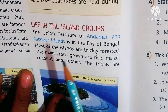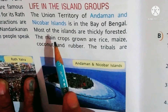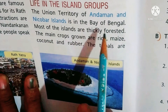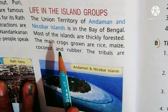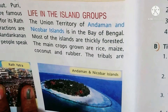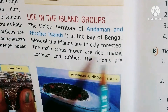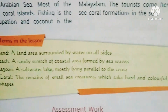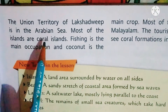Life in the island groups: The Union Territory of Andaman and Nicobar is in the Bay of Bengal. The main crops grown are rice. Tribal communities live on these islands. The Union Territory of Lakshadweep is in the Arabian Sea.